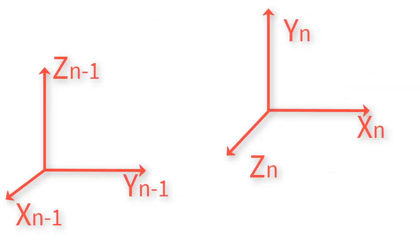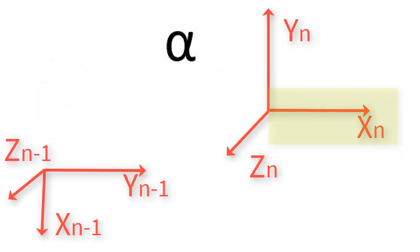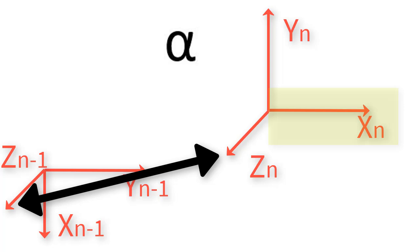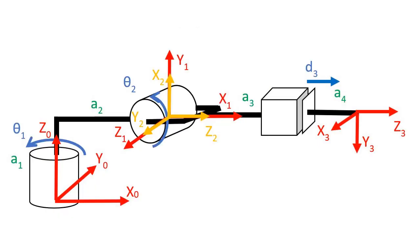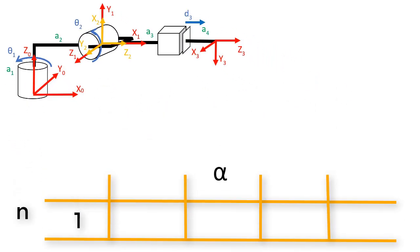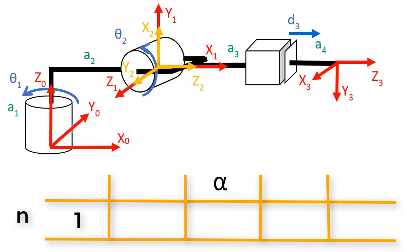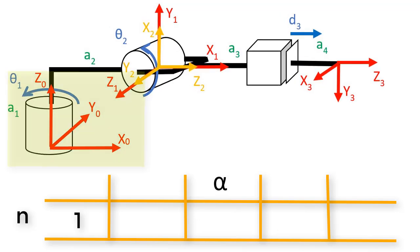Now let's move on to the second parameter, which is also a rotational parameter. It's called alpha. Alpha is the amount that we have to rotate frame n minus 1 around axis x n to get axis z n minus 1 to match z n. For the first row, we substitute n equals 1. Alpha is the amount that we have to rotate frame 0 around axis x 1 in order to get z 0 to match z 1.